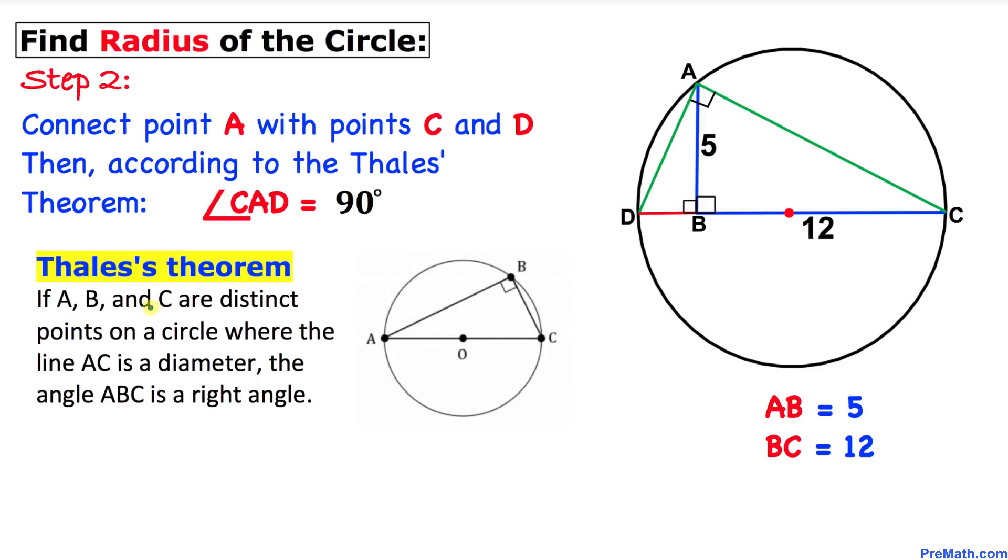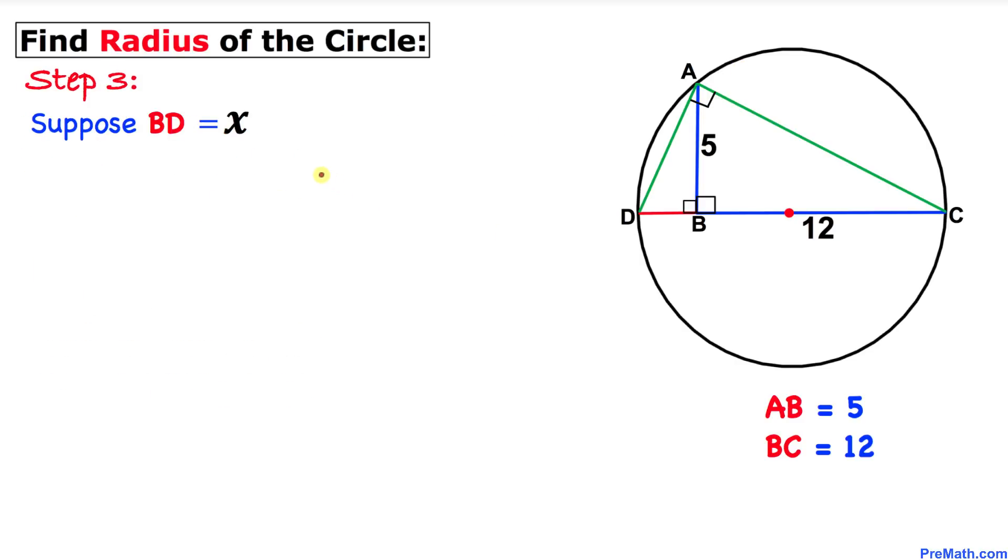If A, B and C are distinct points on this circle where the line AC is the diameter, then this angle ABC is going to be a right angle, meaning it's going to be 90 degrees. Therefore, our angle CAD is 90 degrees.